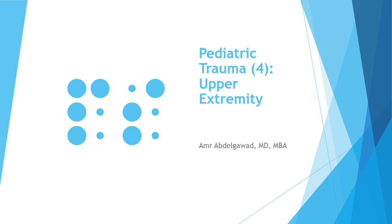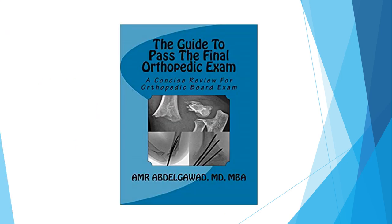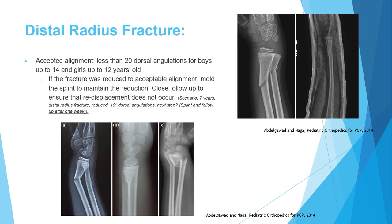Welcome to this lecture in the orthopedic trauma series. We're going to continue talking about pediatric trauma and upper extremity injuries. A good source you can use is this book written by myself. We stopped in the previous lecture at the both-bone forearm. The first topic in this lecture will be the distal radius fracture, which has multiple types as you can see in these pictures from my book on pediatric orthopedic for primary care physician.